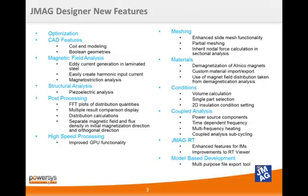In JMeg RT, all the system models have been improved and the RT viewer has also seen many improvements. Finally, JMeg version 12 now has a multi-purpose file export tool that can export force or temperature data to third-party software programs. We'll be covering a lot of these features during the remainder of this presentation, but again, if any of these features is of importance to you, please feel free to contact us.